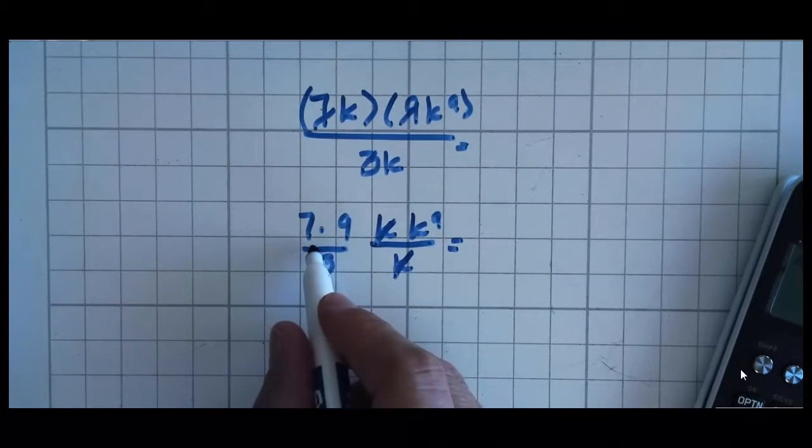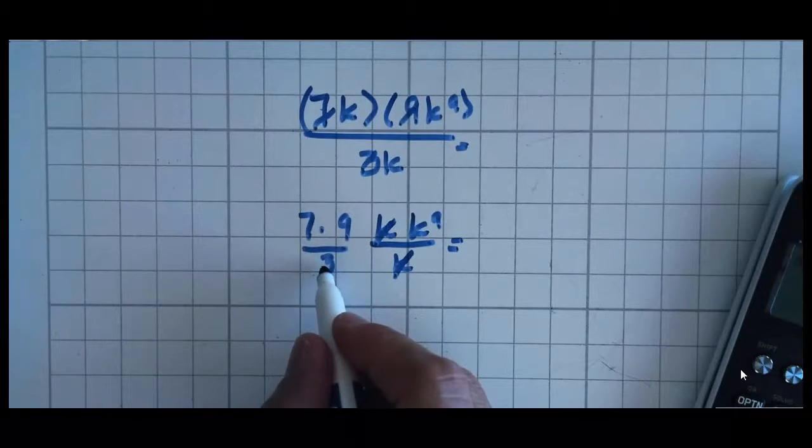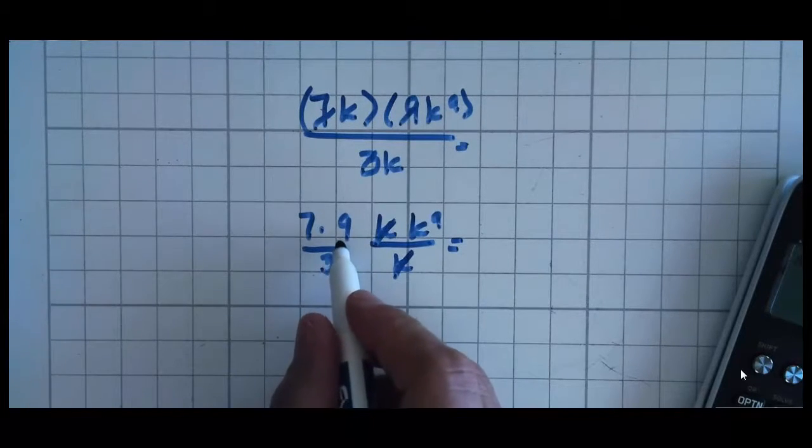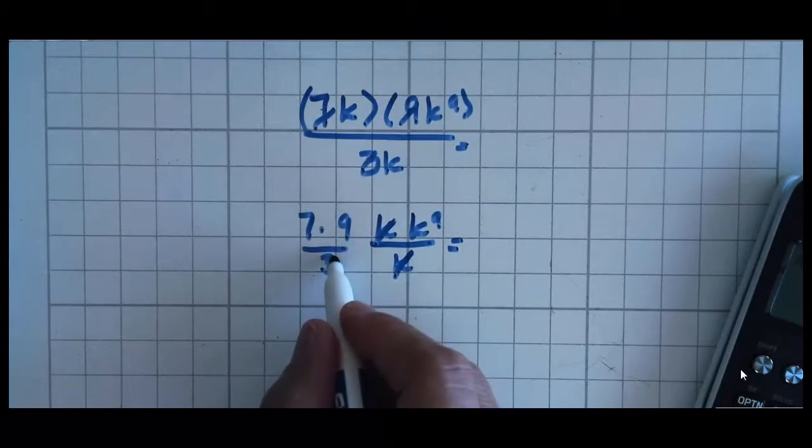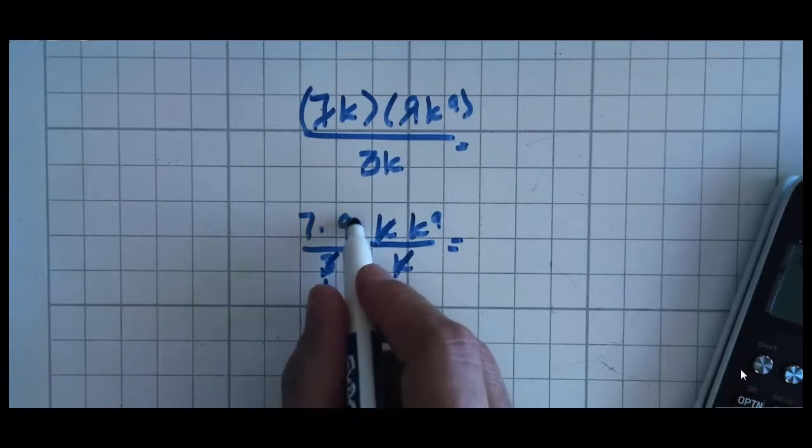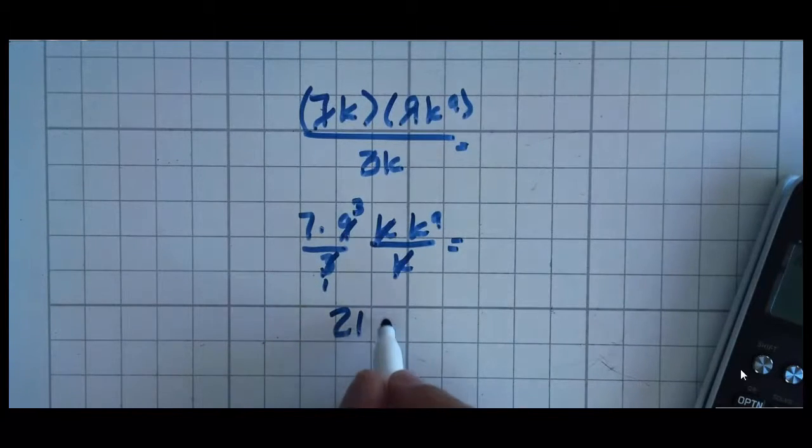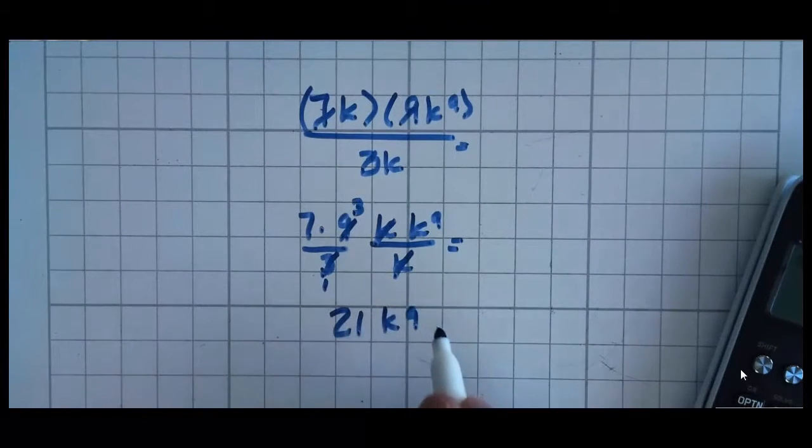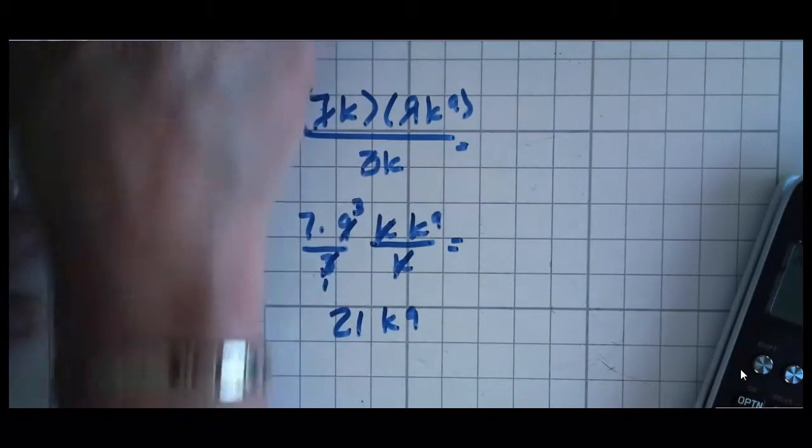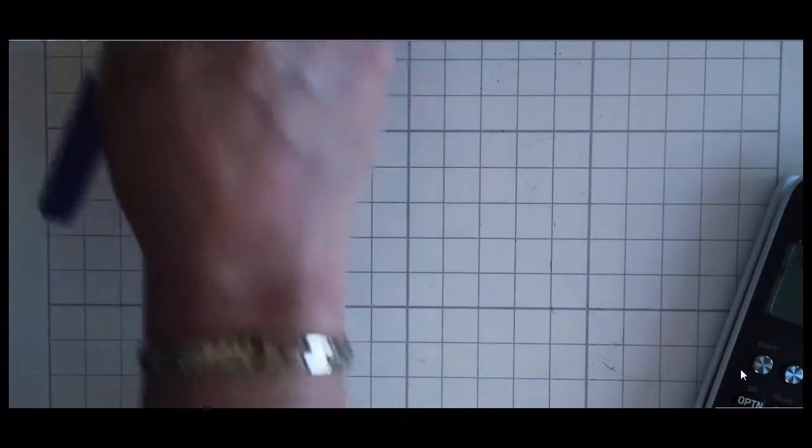Now, I can multiply 9 times 7 and then divide it by 3. But I know that 3 is a factor of 9. So 3 goes into 3 once. 3 goes into 9 three times. So now my problem becomes 7 times 3, k to the 9th. And that's my answer. So when you have numbers, variables, and letters in the same problem, separate it out.